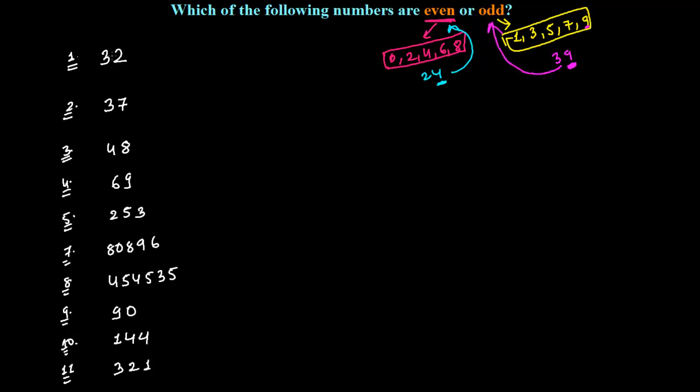So now let's separate which are odd and which are even, one by one. Now see, the last digit is 2 and 2 comes in the even number category. So that's why this is an even number. And next time onward, we will be writing E only for even numbers.